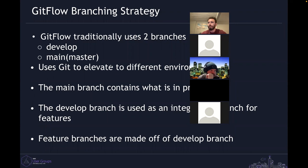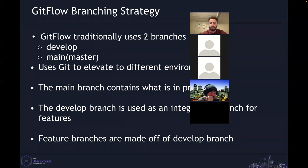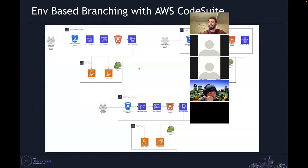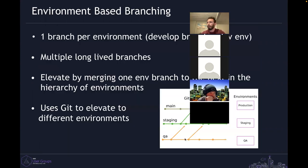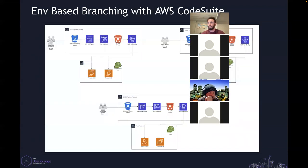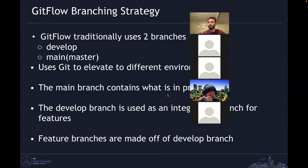Q: Do you tie those accounts together with AWS Organizations? A: Yes, this was all configured with AWS Organizations. With Git Flow, like I mentioned, you don't have to have a branch-per-environment mapping — you could have multiple environments and only two branches, which is traditionally how Git Flow works. You could incorporate more branches, but traditionally it's a develop branch and a main or master branch.